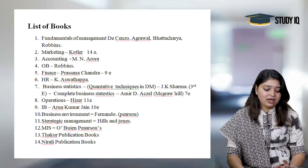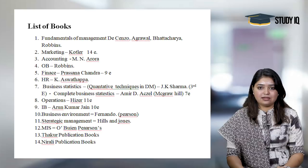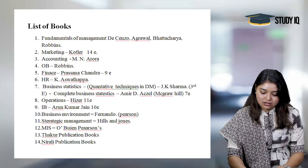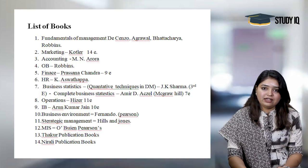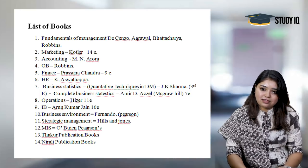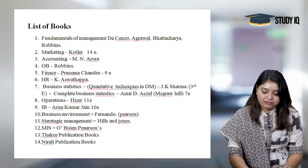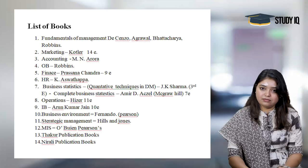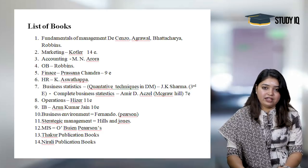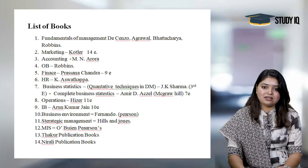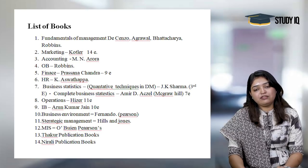For Business Statistics, the book is 'Quantitative Techniques in Decision Making' by J.K. Sharma, 3rd edition. Another recommended book is 'Complete Business Statistics' by McGraw-Hill Publications, 7th edition. These are two books for business statistics. The basics book you referred to in graduation or PG can also be used — all the concepts need to be covered thoroughly.